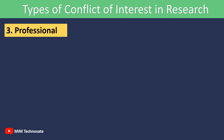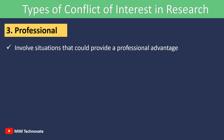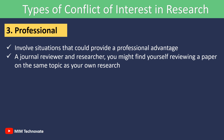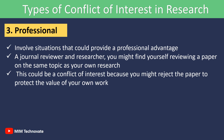3. Professional. Professional conflicts of interest involve situations that could provide a professional advantage. For example, as a researcher and reviewer, you might find yourself reviewing a paper on the same topic as your own research. This could be a conflict of interest because you might reject the paper to protect the value of your own work.